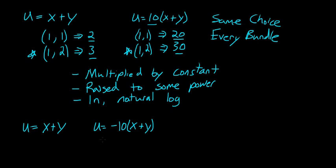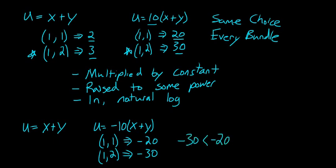This is going to reverse our preferences. The bundle (1,1) will yield -20, and the bundle (1,2) would yield -30. And since -30 is less than -20, this would change our preferences to prefer the bundle with (1,1), meaning that these two utility functions can't be the same.